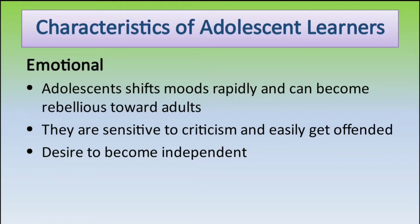Emotional characteristics: Adolescents shift mood rapidly and can become rebellious towards adults. They are sensitive to criticism and easily get offended. The desire to become independent is a highlight in their behavior. We all deal with these challenges during adolescence — our parents find us very rebellious. They are also sensitive to criticism.